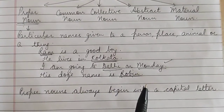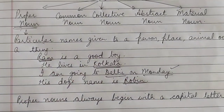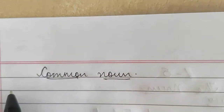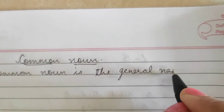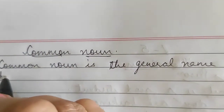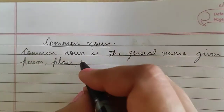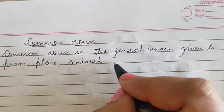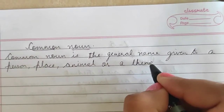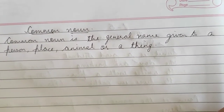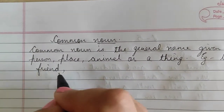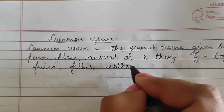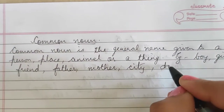So I hope children you have understood what is a proper noun. Now let's move on to another kind of noun — common noun. Common noun is the general name given to a person, place, animal or a thing. Like for example: boy, girl, friend, father, mother, city, dog, etc. All these are common nouns.